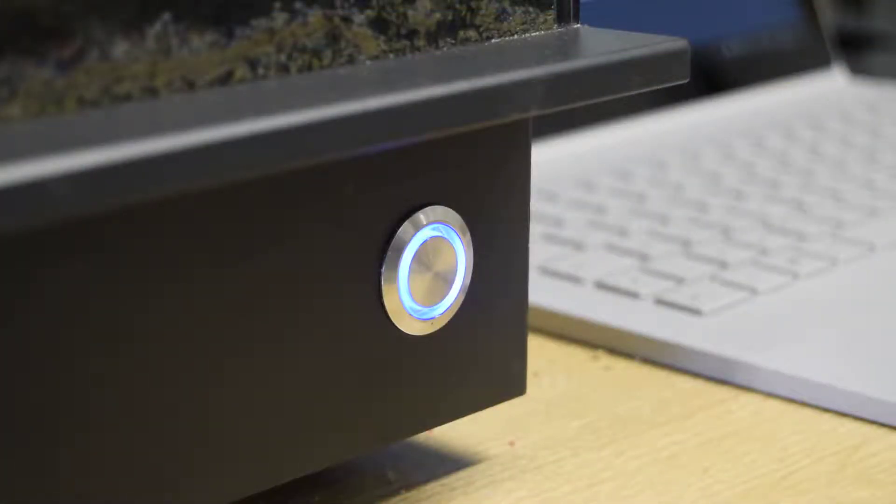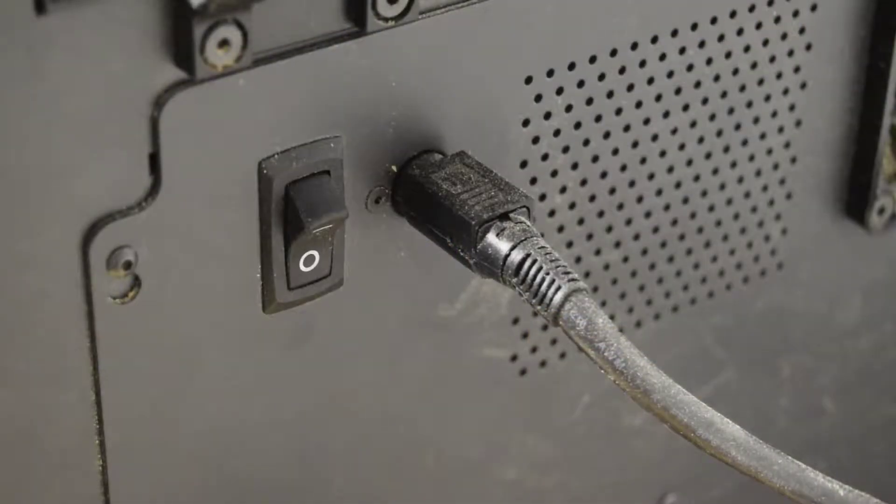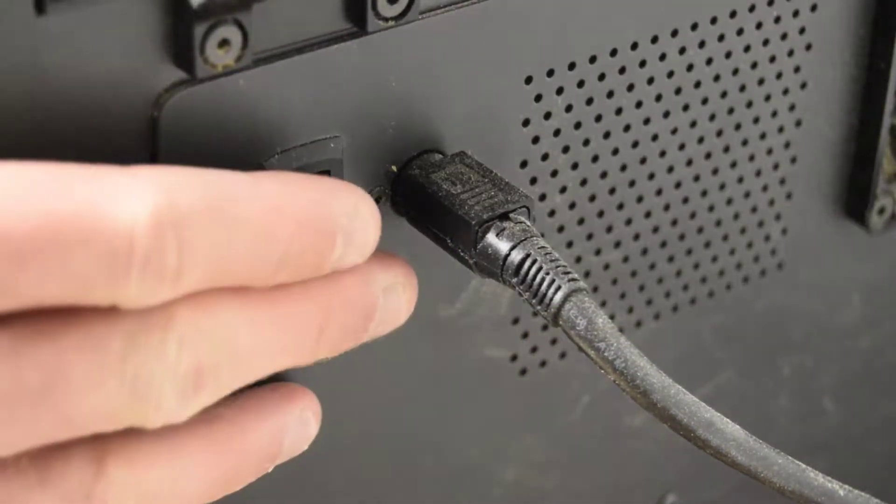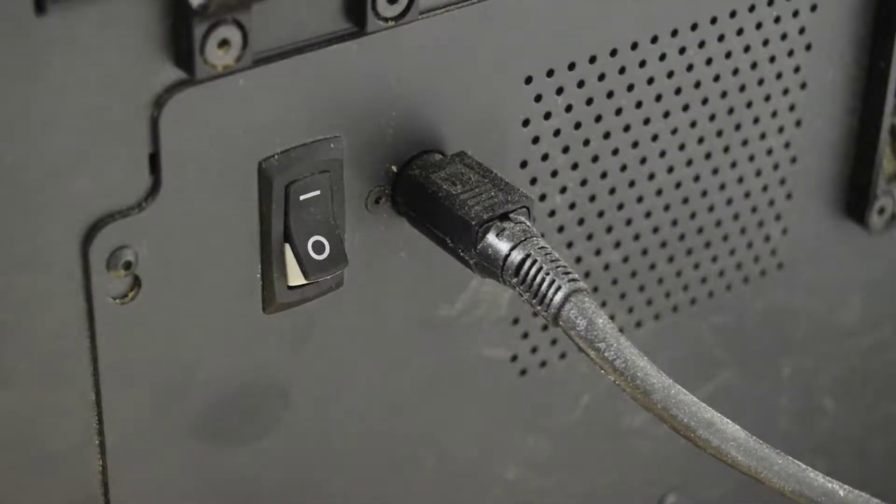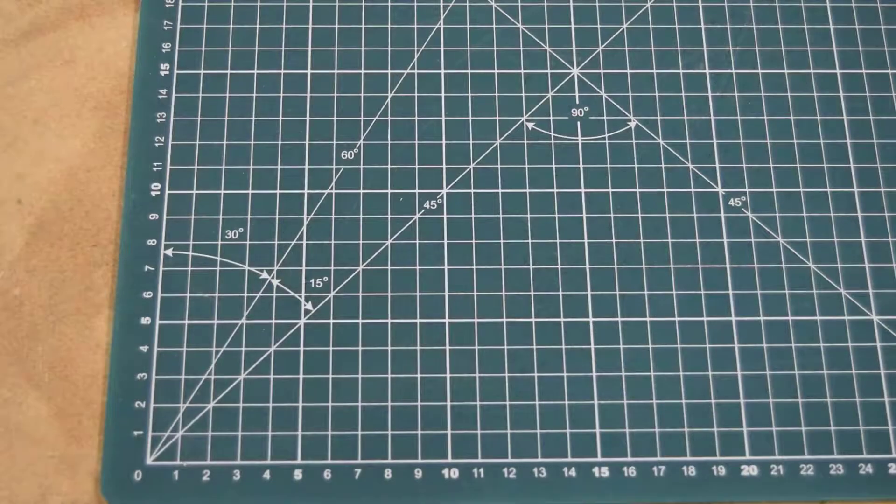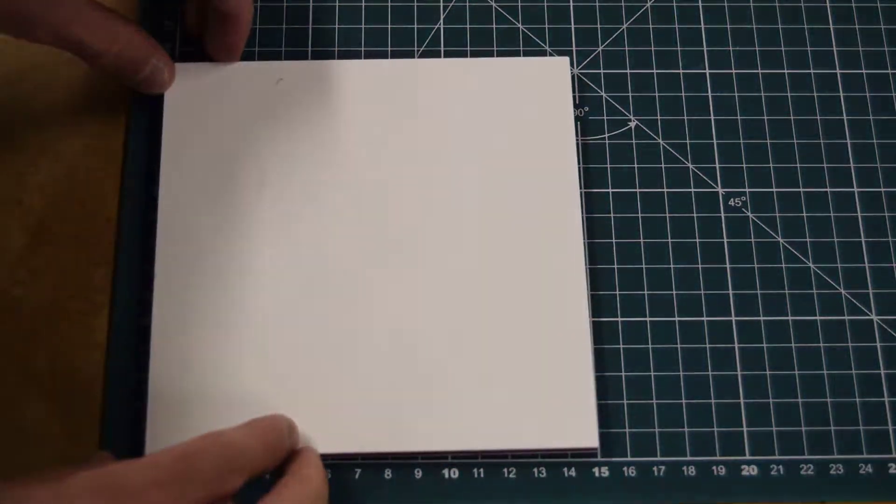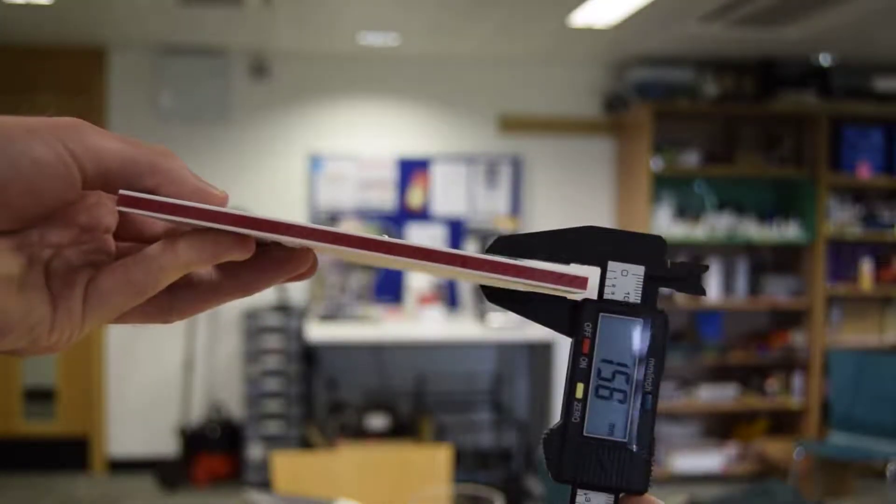The first thing to check is that the machine is on, indicated by a blue light on the front. If not, the on-off switch can be found at the back. Ensure your material is no larger than the wasteboard and matches the dimensions entered into the Easel software.